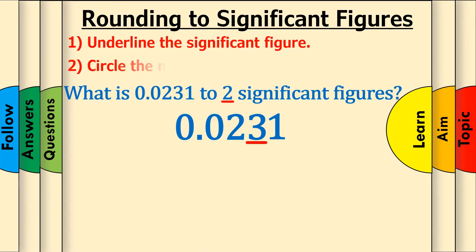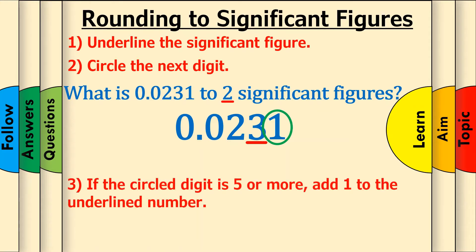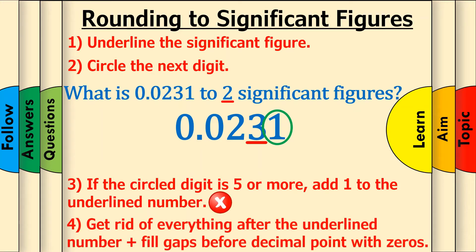Step 2: Circle the next digit, which is 1. Step 3: If the circled digit is 5 or more, add 1 to the underlined number. 1 isn't 5 or more, so don't do anything. Step 4: Get rid of everything after the underlined number. There are no gaps we need to fill before the decimal point, so we can just skip this step. We're left with the final answer of 0.023.